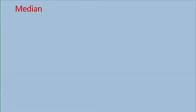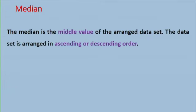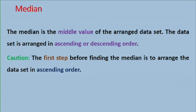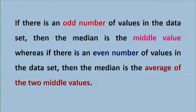Now we look at the median. What is the median? It is the value, the middle value, of the arranged data set. The data set should first be arranged either in ascending or descending order, and it will correspond to the middle value. Now, if there is an odd number of values in the data set, then the median is the middle value. But if we have an even number of values in the data set, then the median is the average, that is the mean, of the two middle values.